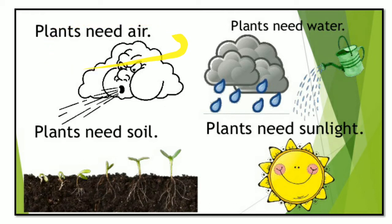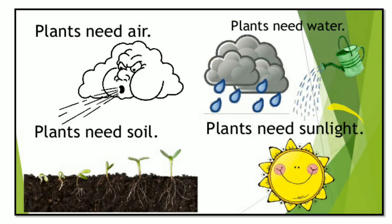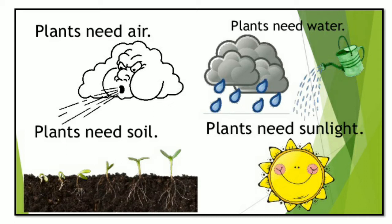Plants need air, plants need water, plants need sunlight, and plants need soil. These are the four types of things plants need to grow: air, soil, water, and sunlight. These four things are important for plant growth.